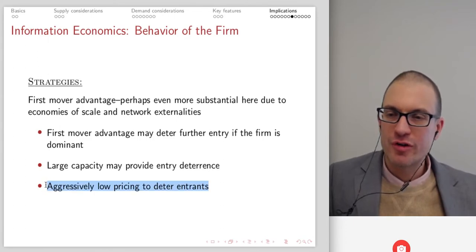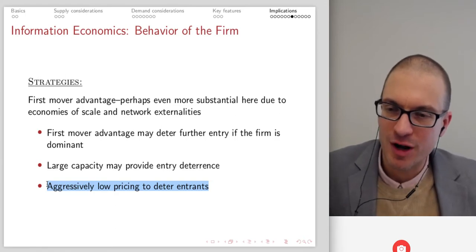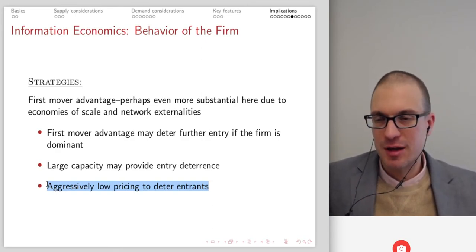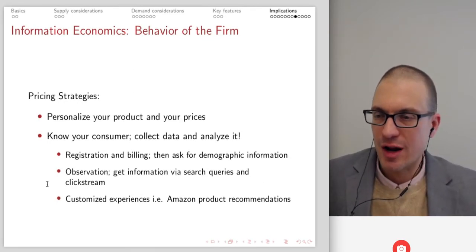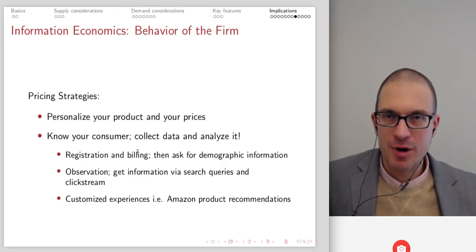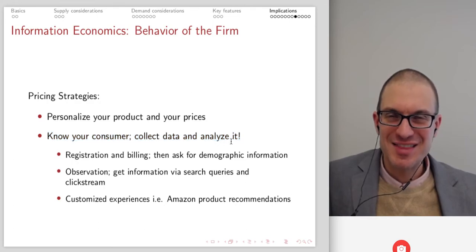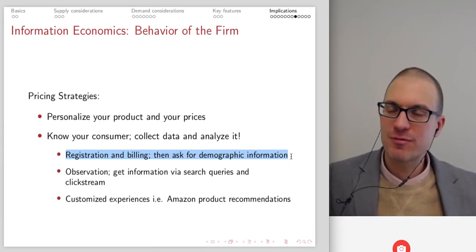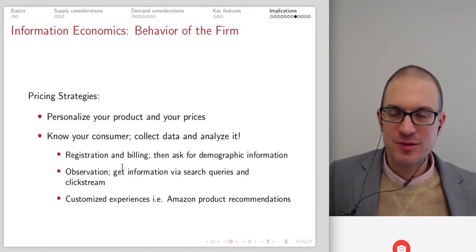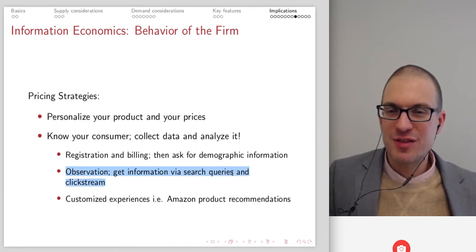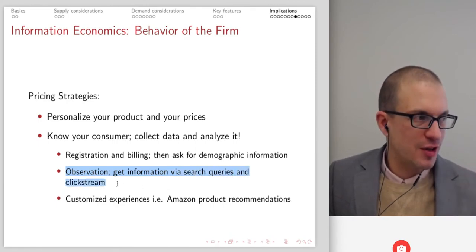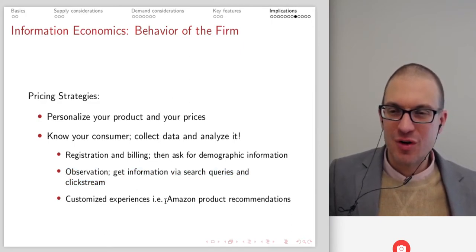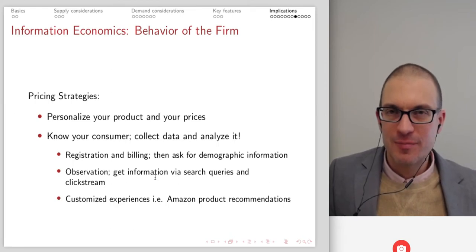You could aggressively price low to deter entrants — you can't price below marginal cost because that's predatory pricing and illegal, but you could price lower than full monopoly power as an entry deterrence strategy. Pricing strategies: personalize your products and prices. Know your customer — try to collect data and analyze it. Registration and billing give you a lot of information. Ask for additional demographic information; customers willing to share give you data to tailor product recommendations. Get information via searches and click streams — what did they click through before making this purchase? That's information Amazon has and is using.